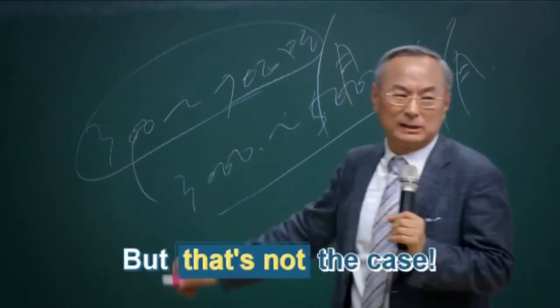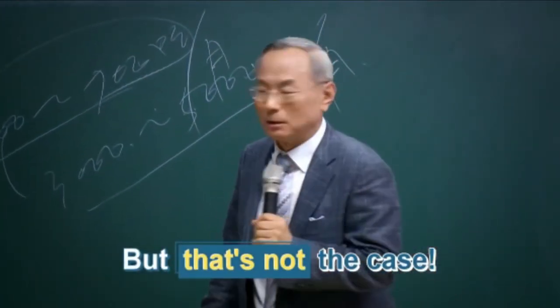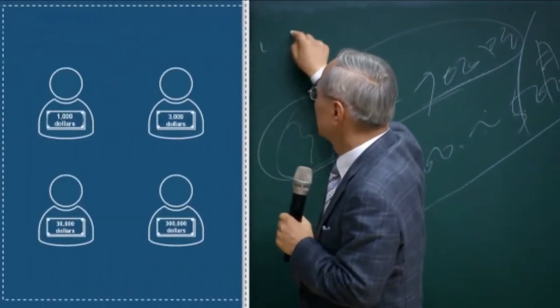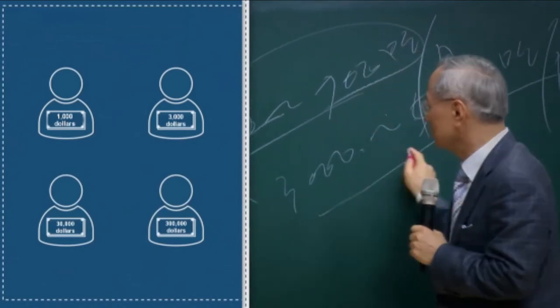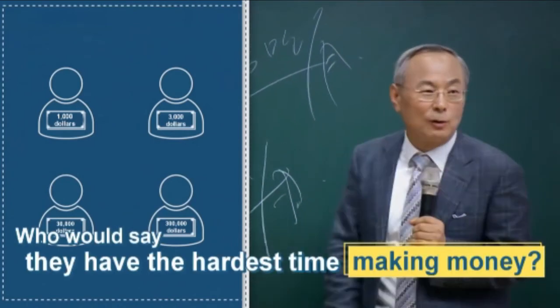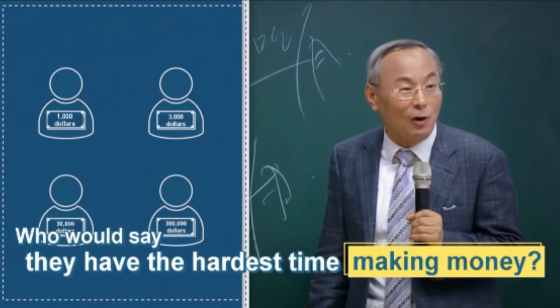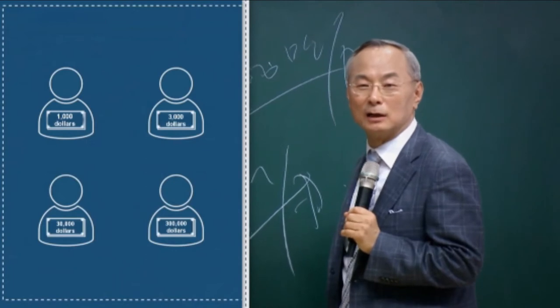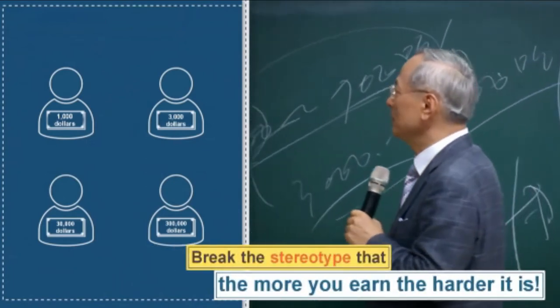There are people who make one thousand dollars a month, some make three thousand, some thirty, some even three hundred thousand. Then who has the hardest time making money? It should be a hundred times harder for those who earn three hundred thousand, right? But it's the one thousand earners that say making money is way too hard.